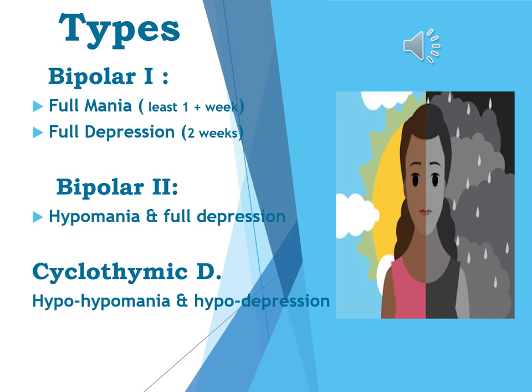There are three illnesses within the bipolar disorder family. In bipolar 1, the person has at least one full-blown manic episode and at another point full-blown major depression. In bipolar 2, they never reach a fully manic episode — it's sub-manic, or hypomanic — and they also have major depression. For cyclothymic disorder, the person never even reaches hypomania; it's a chronic sub-hypomanic condition with no major depression.